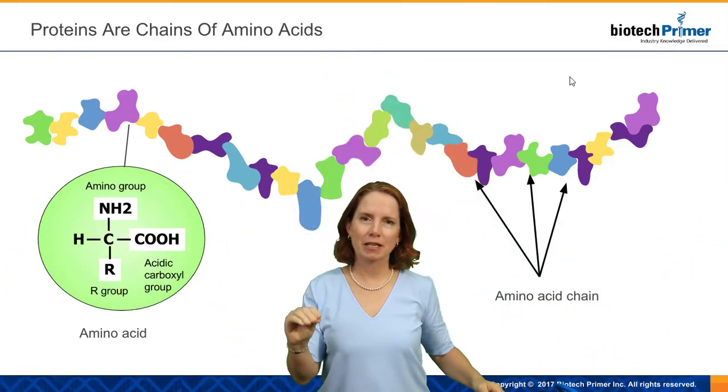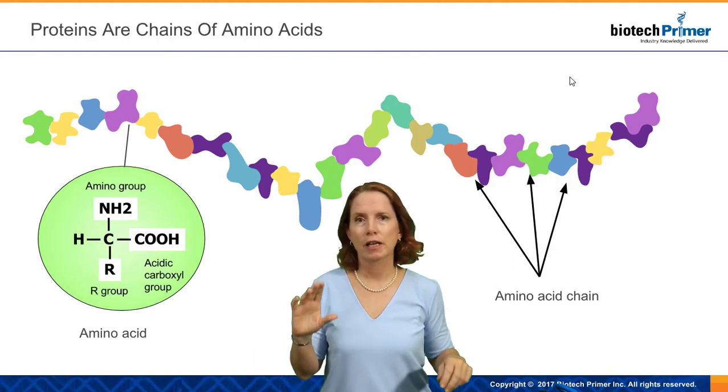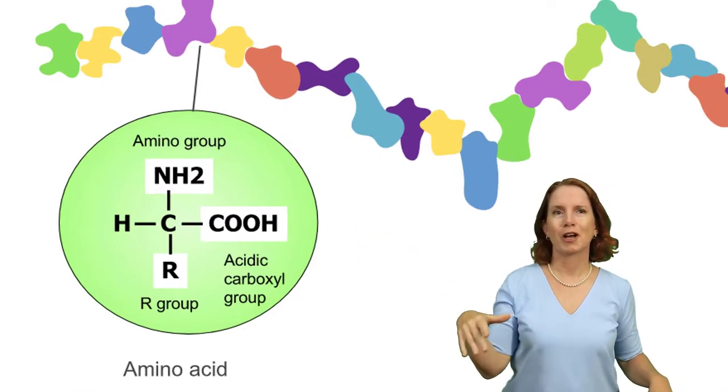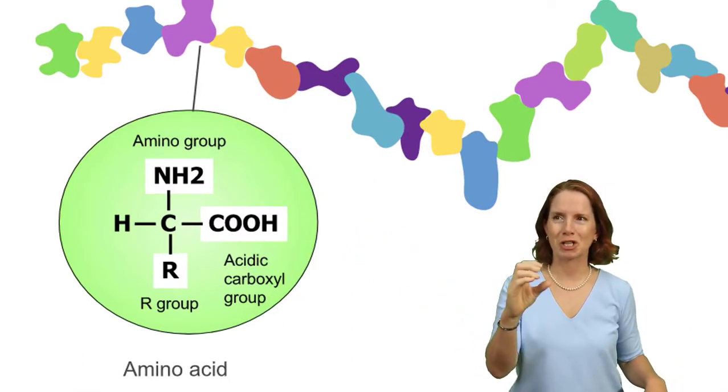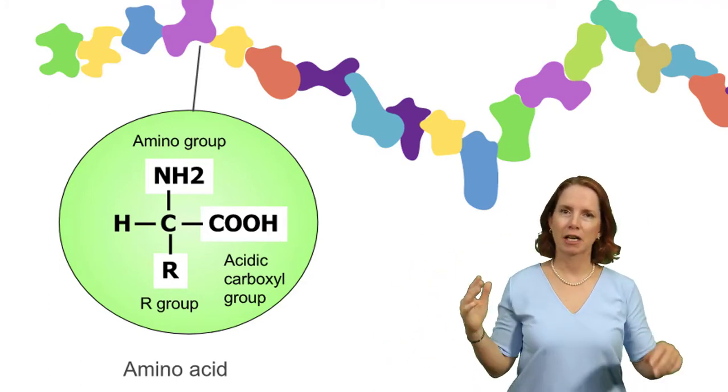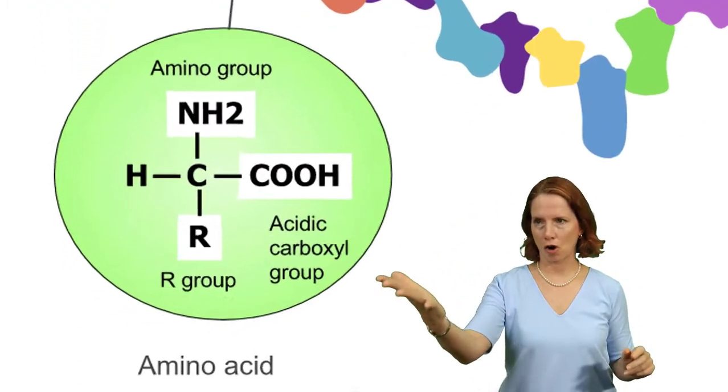And amino acids, there's 20 that are used to make proteins in humans. They have a similar structure, as we can see here in the diagram. They all have a carbon atom in the middle, a carboxyl group, an amino group, and a hydrogen atom attached.